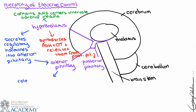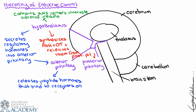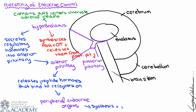Moving on to the anterior pituitary's functions: the anterior pituitary releases peptide hormones that bind to receptors on peripheral endocrine organs. Since they're all peptide hormones, they're all water-soluble and they work by second messenger. When they communicate with these peripheral endocrine organs, the organs will synthesize and release additional hormones, and those hormones can regulate the activity of the hypothalamus and the anterior pituitary by negative feedback.